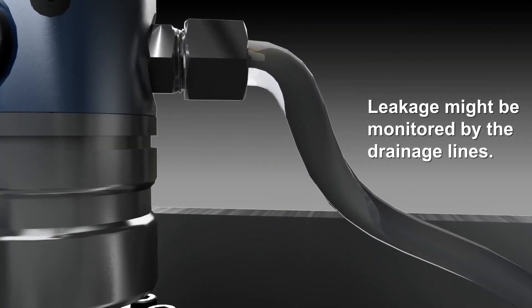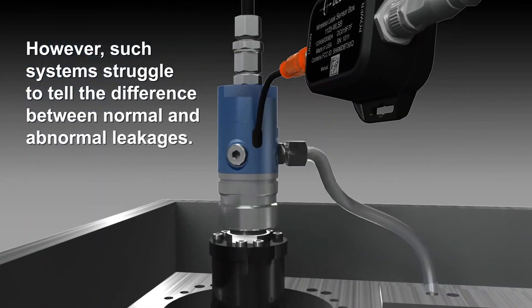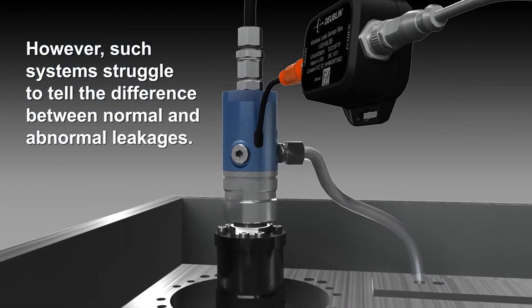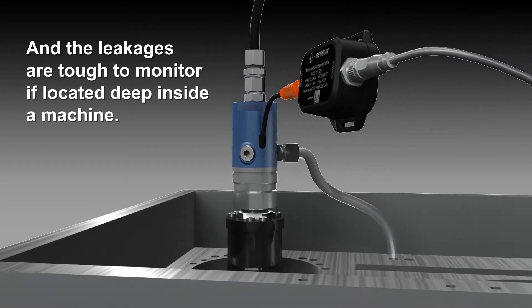Traditionally, leakage might be monitored by the drainage lines. However, such systems struggle to tell the difference between normal and abnormal leakages, and the leakages are tough to monitor if located deep inside a machine.